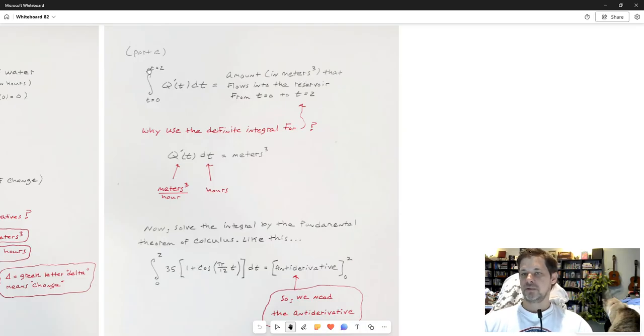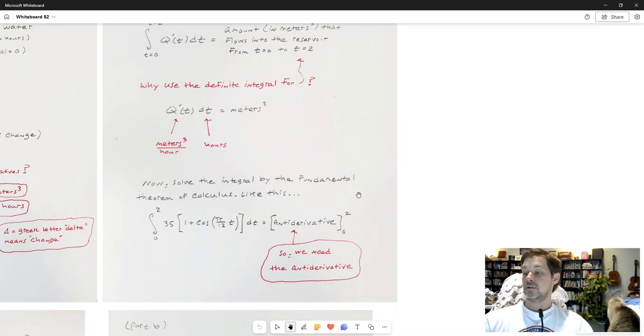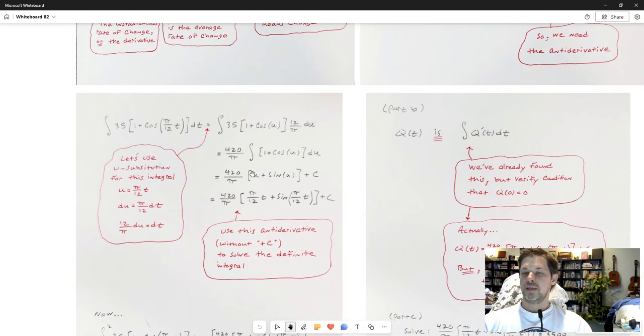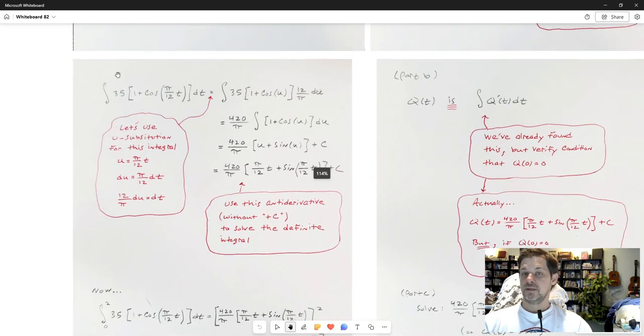Now let's solve this integral. We would use the fundamental theorem of calculus to solve this integral, and what that means is I find the antiderivative of this function, q'(t), and evaluate it between the upper and lower bound of the definite integral. We must need the antiderivative to get anywhere. So how do we get the antiderivative of 35 times 1 plus cosine pi over 12t? The way that would occur to me is by u-substitution.